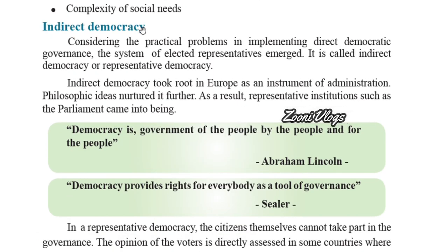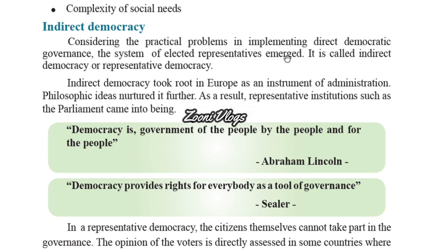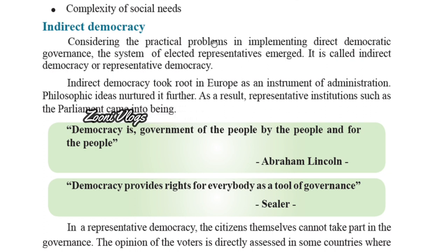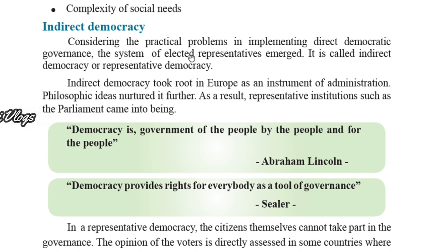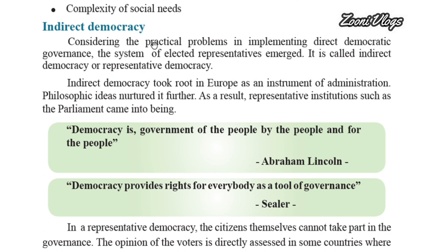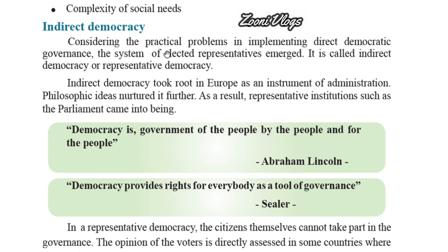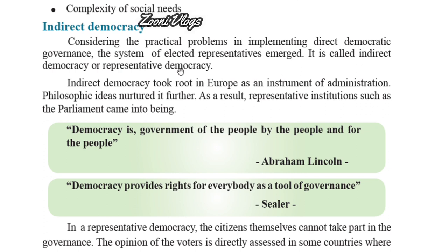Considering the practical problems in implementing direct democratic governance, the system of elected representatives emerged. Because direct democracy faced many problems, ministers and parliament ministers were appointed — that means leaders were appointed to help the people carry out the government's decisions. This is called indirect democracy, or representative democracy.